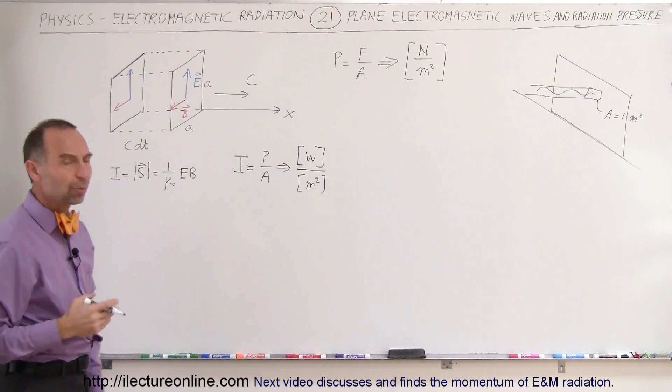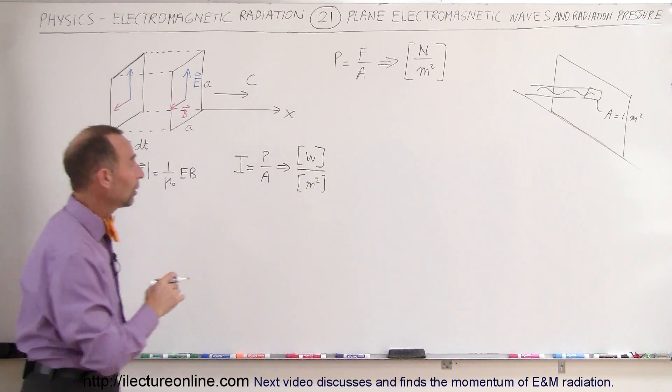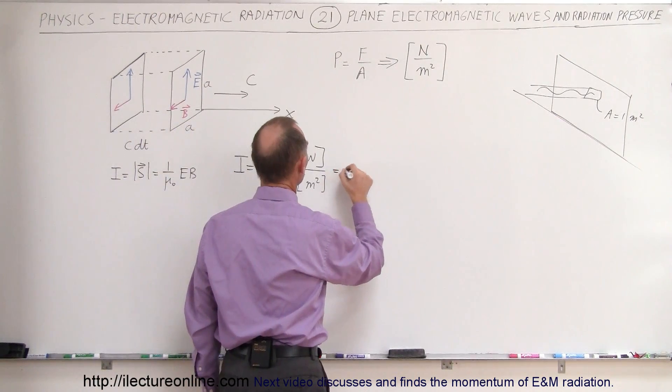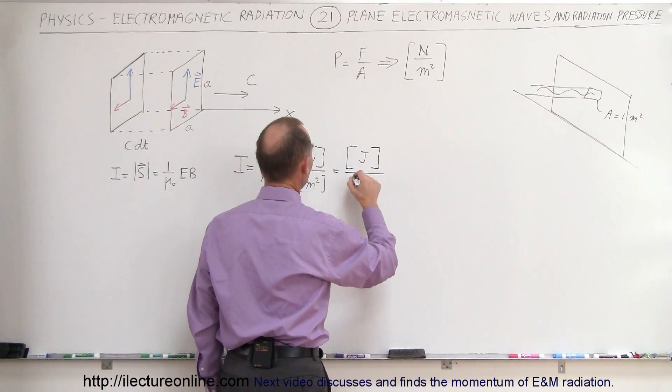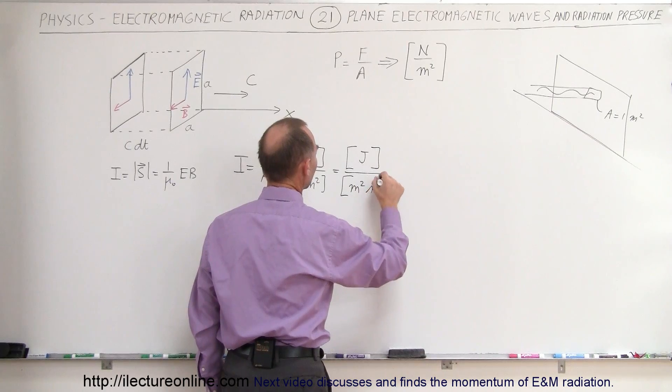That's not quite newtons per square meter, but it's close. So what is a watt? A watt is a joule per second. So we can say this is equal to a joule divided by meters squared times seconds.